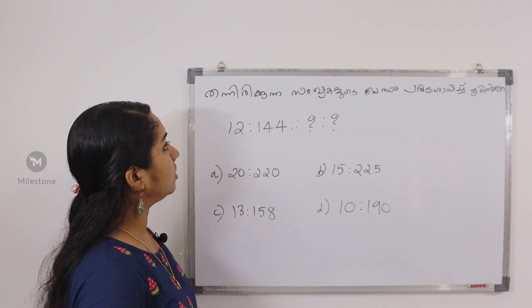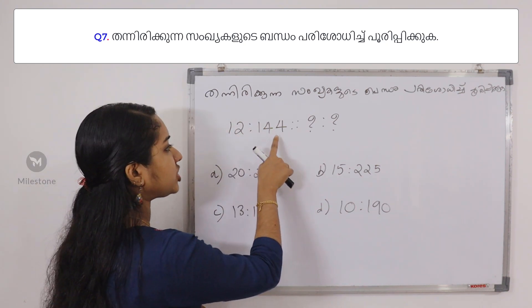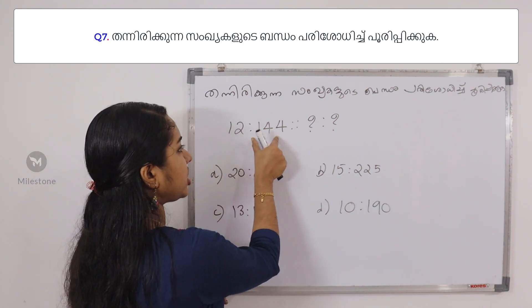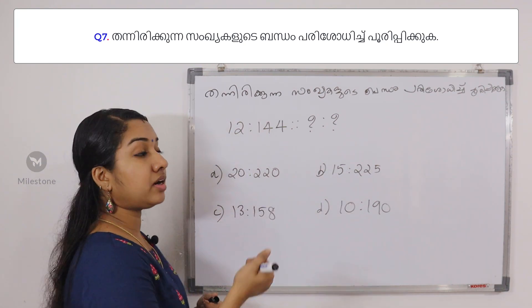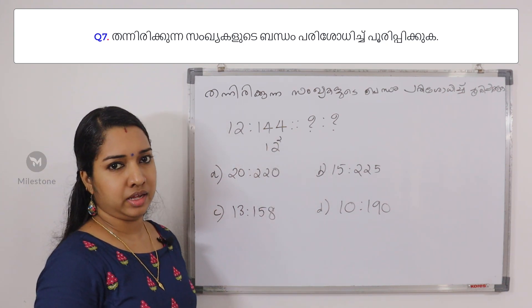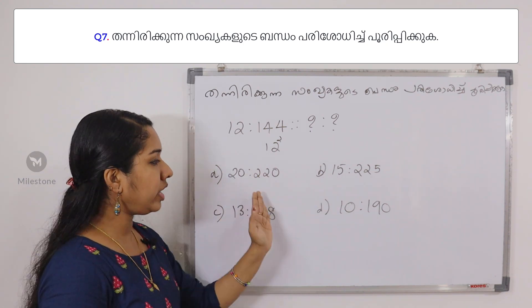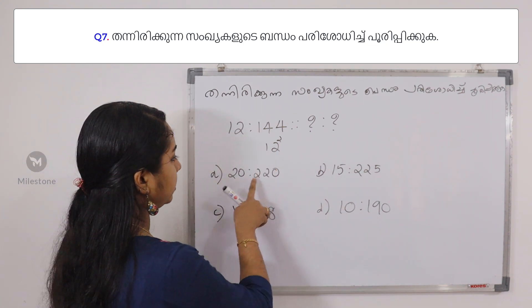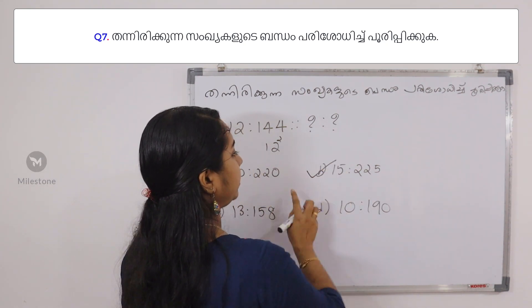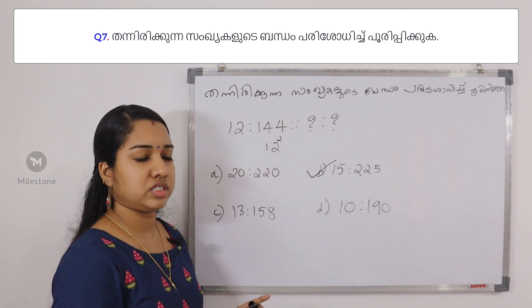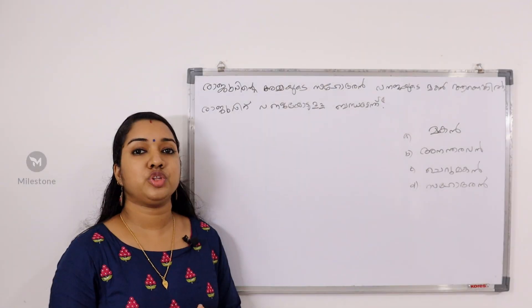This is an easy question. Let's talk about the relationship: 12 is to 144. Let's take a picture of a pair in this relationship. 12 is 144 — one number is the square. So in this option, one number is the square. 20 is 400? No, 15 squared is 225. So the answer follows the square relationship.